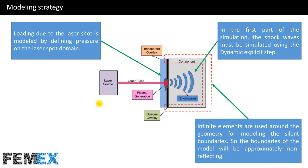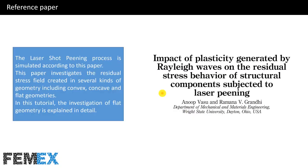Now I want to talk about modeling strategy. This is the schematic of the laser shot peening process — the laser source, the laser shot, and the specimen. Loading due to the laser shot is modeled by defining pressure on the laser spot domain. In the first part of the simulation, the shock waves must be simulated using the dynamic explicit step. Infinite elements are used around the geometry for modeling the silent boundaries, so the boundaries of the model will be approximately non-reflecting.